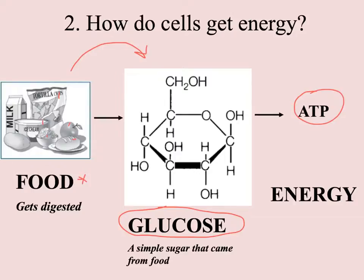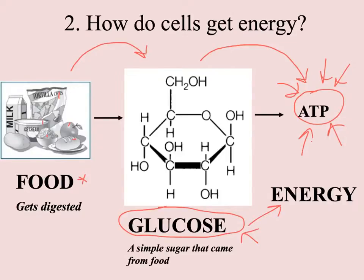Once we have that one simple sugar molecule, the mitochondria in our cells can convert that glucose into ATP. Glucose is good and can be converted into energy, but it is not ready to be used immediately — it first needs to be converted into ATP.